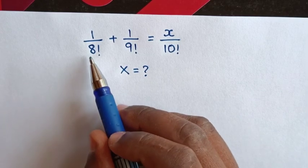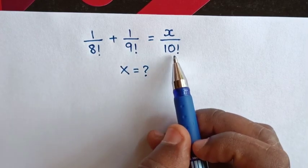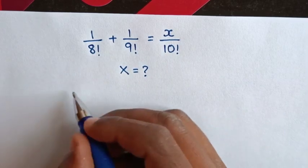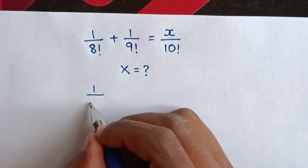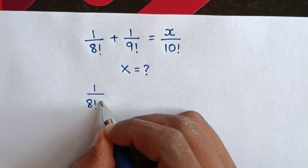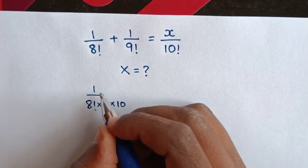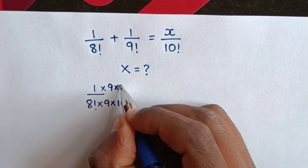From here you can see 8 factorial, 9 factorial, 10 factorial. Then for this 8 factorial to have common 10 factorial, it will be 1 over 8 factorial times 9 times 10, and here the numerator will multiply times 9 times 10.